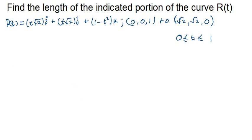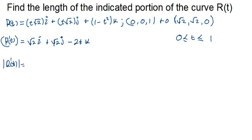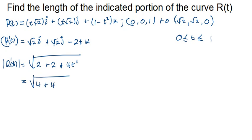The first derivative r'(t) is equals to √2 in the i, plus √2 in the j, plus minus 2t in the k. Then the magnitude of the first derivative: we're going to have 2 plus 2 plus 4t squared. This becomes 4 plus 4t squared, which simplifies to 2√(1 + t²). That's the magnitude.